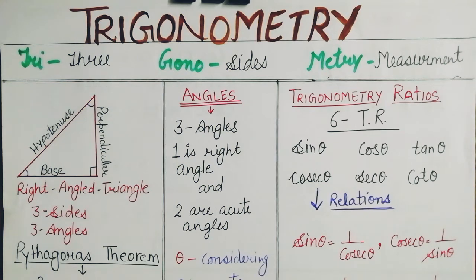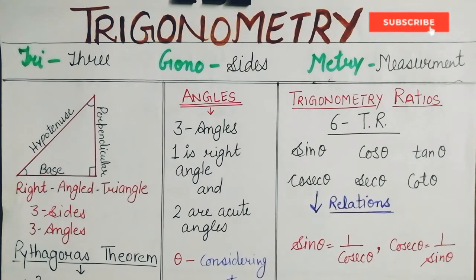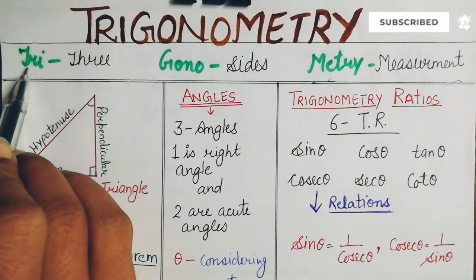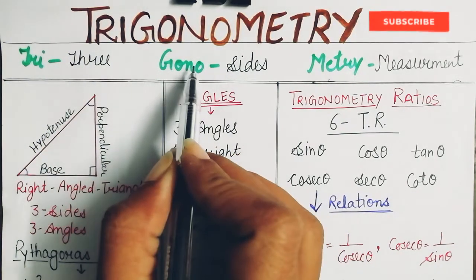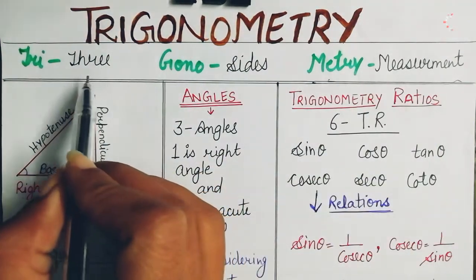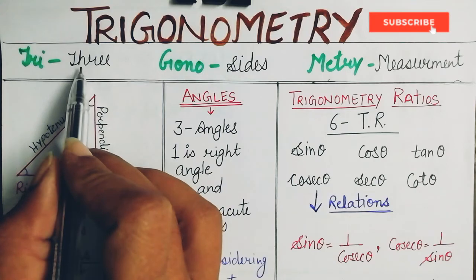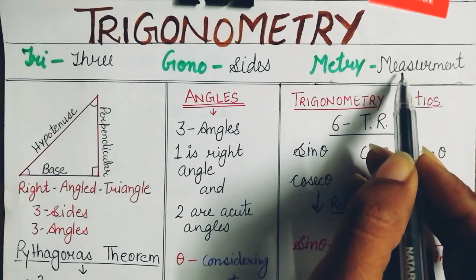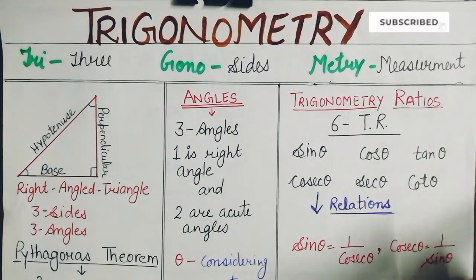Hello students, welcome to you all. I hope you are all doing well. Today's class is going to be about trigonometry. Firstly, we should know about the name of this topic. Trigonometry is a combination of three words: 'tri' means three, 'gono' means sides, and 'metric' means measurement.